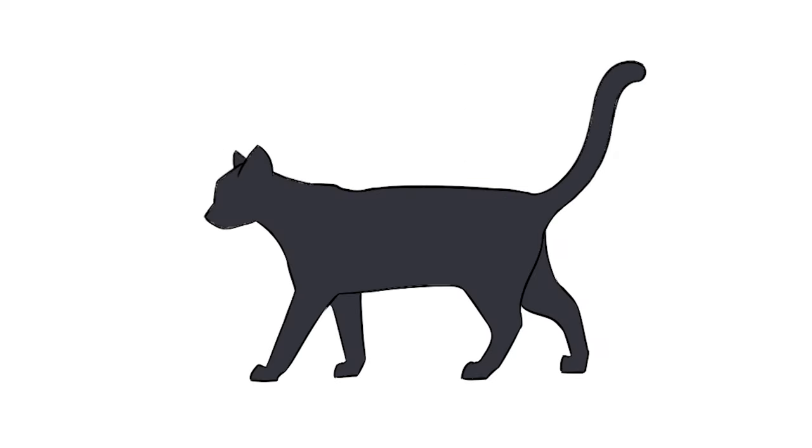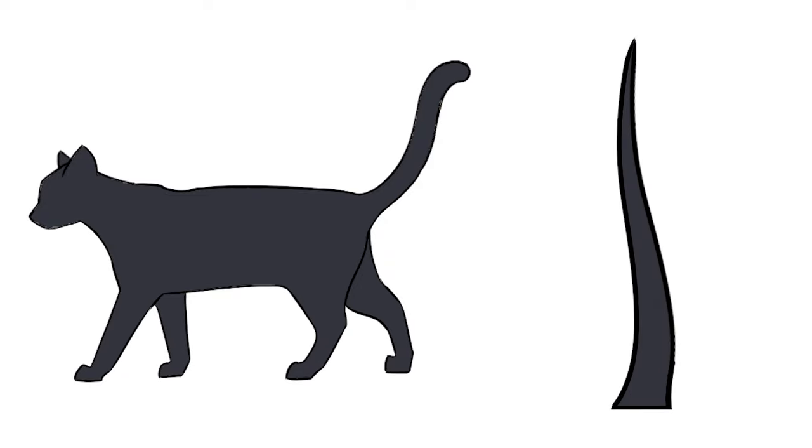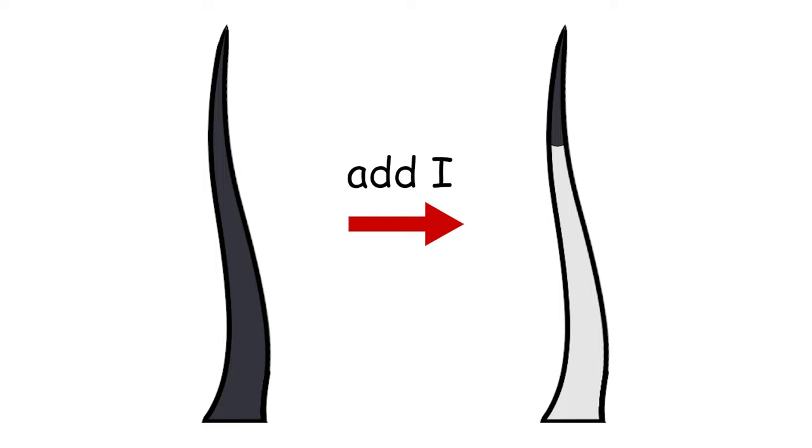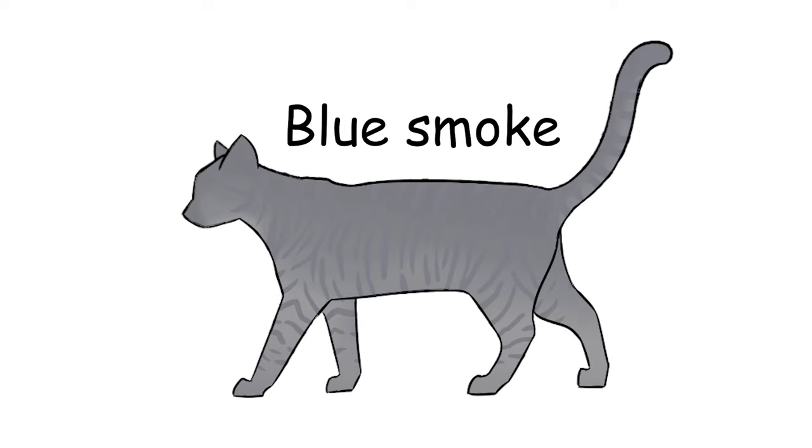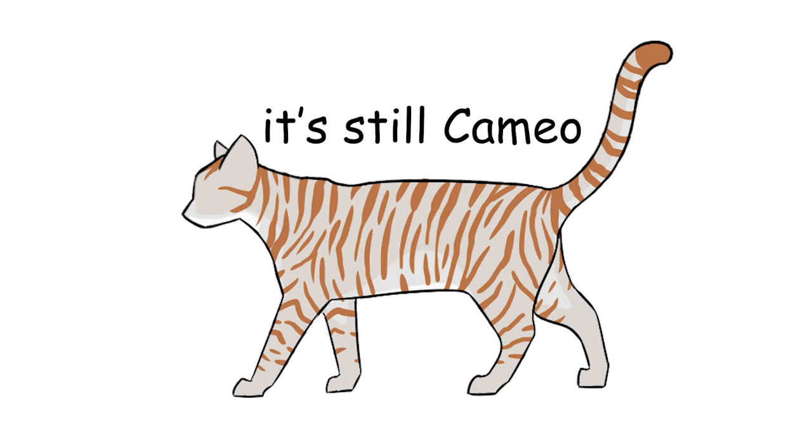In self-cats, who are homozygous recessive little a little a, inhibitor's effect is a bit different, because self-cats' hairs have no banding. What inhibitor does instead is add a long, pale band to the base of the hairs, and the tip remains full color. We call this smoke. Black smoke, blue smoke, and cameo again.